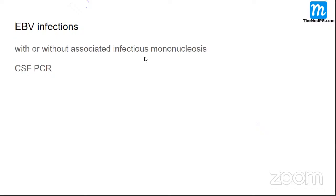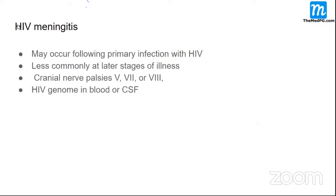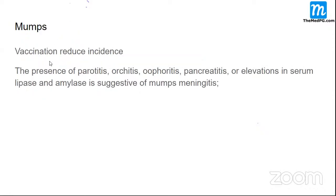Epstein-Barr virus can cause meningitis with or without infectious mononucleosis, diagnosed by PCR. HIV meningitis may occur following primary infection during viremia or later in illness, and cranial nerve palsies (fifth, seventh, eighth) can occur. Mumps meningitis has decreased due to vaccination; associated features include orchitis, parotitis, and pancreatitis (elevated serum lipase and amylase).